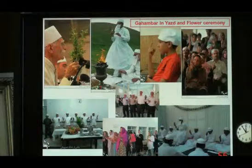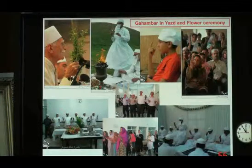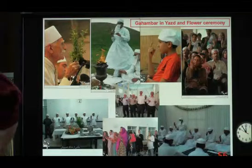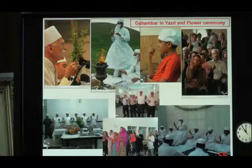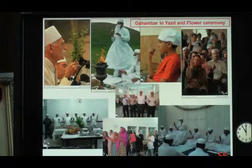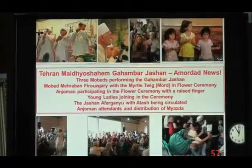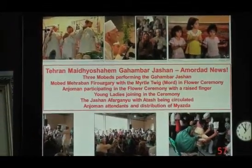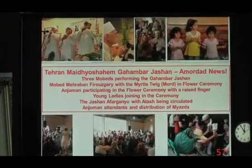Here is actually the Gambara in Iran on slide number 56. Dastuji Firozgari is in the upper left with the myrtle twig, and the little boy with the index finger up there, and the other people joining in. In the lower right corner is in Mumbai, showing how we do the flower ceremony with the flower in our hands. Number 57 is the Maidyo Shem Gambar Jashen from the Amadad News.